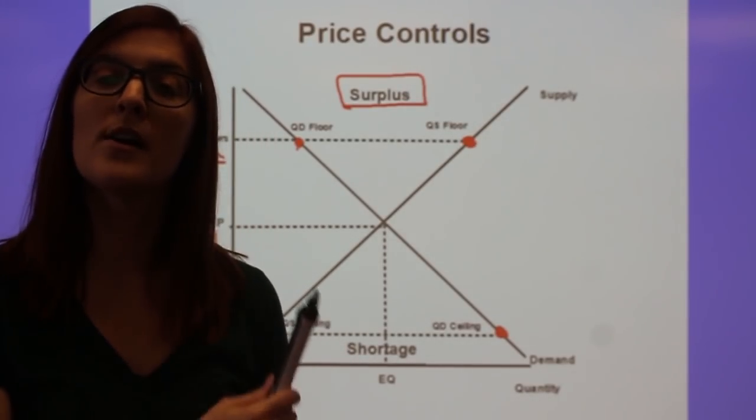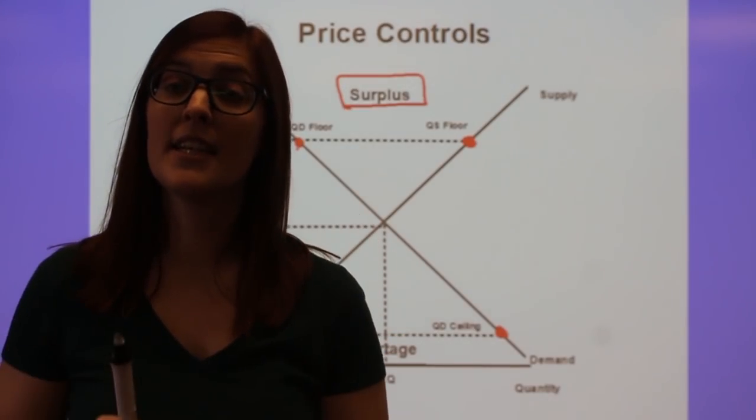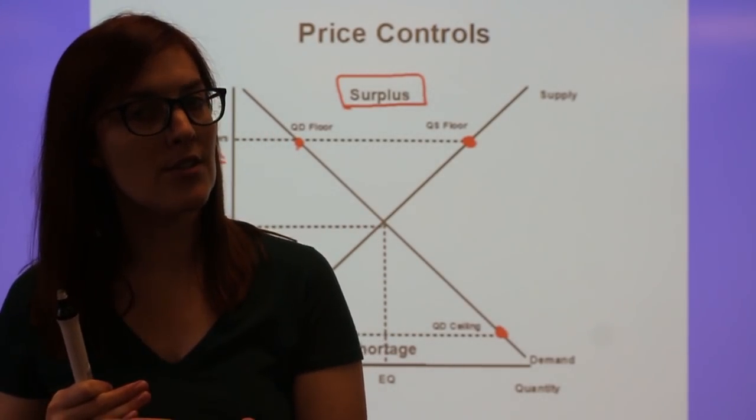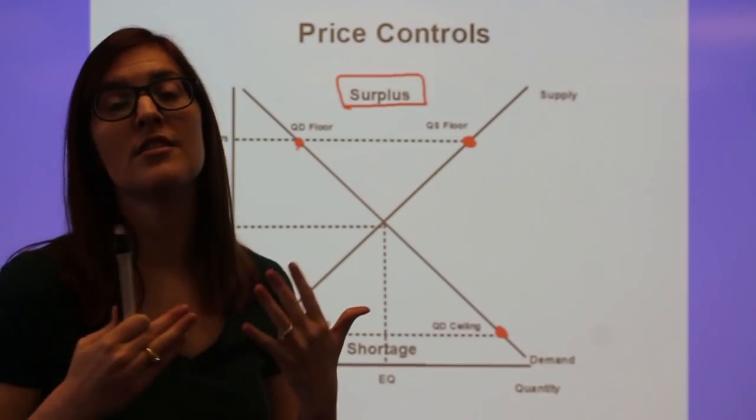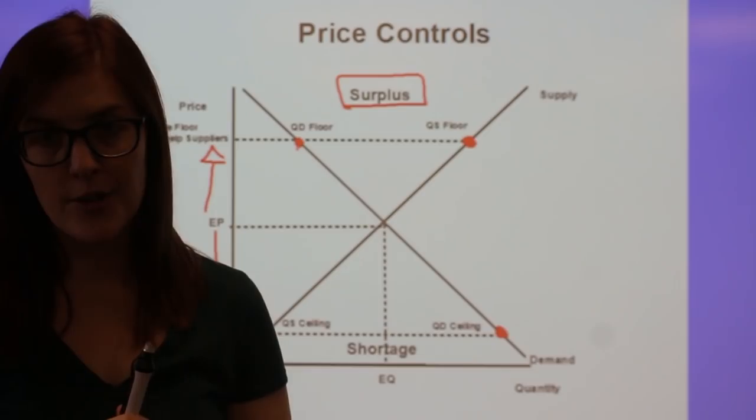So here we have the quantity demanded is higher than the quantity supply, which is why a price decrease always creates a shortage. So price problems create shortages and surpluses instead of changes in equilibrium because it only changes the quantity, not the behavior.